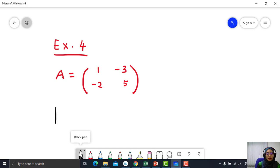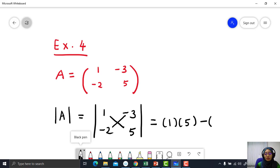Determinant of A equals, by using the formula to find the determinant of a 2 by 2 matrix, 1 times 5 minus negative 3 times negative 2, which equals negative 1.